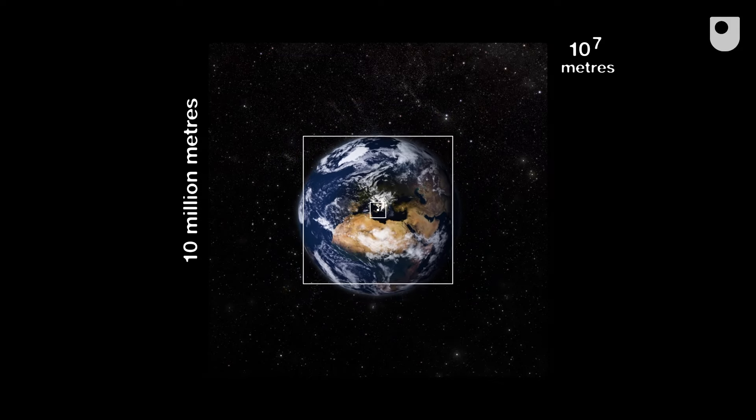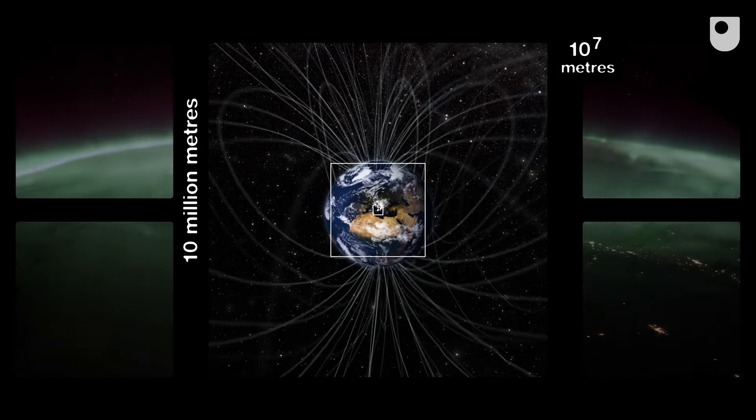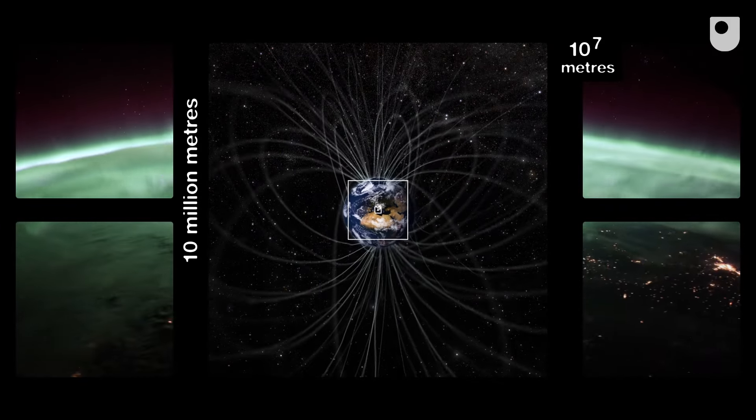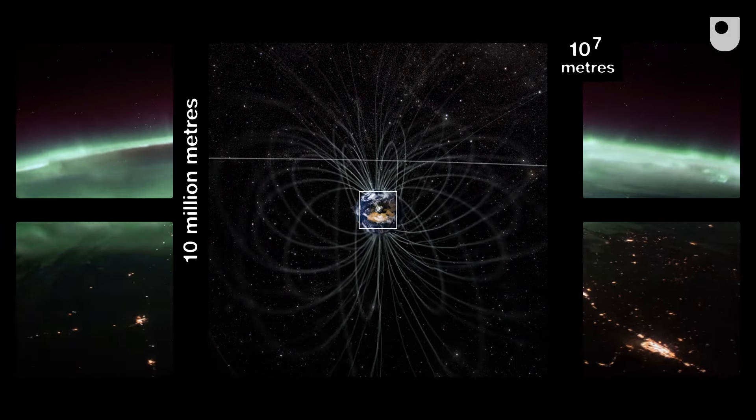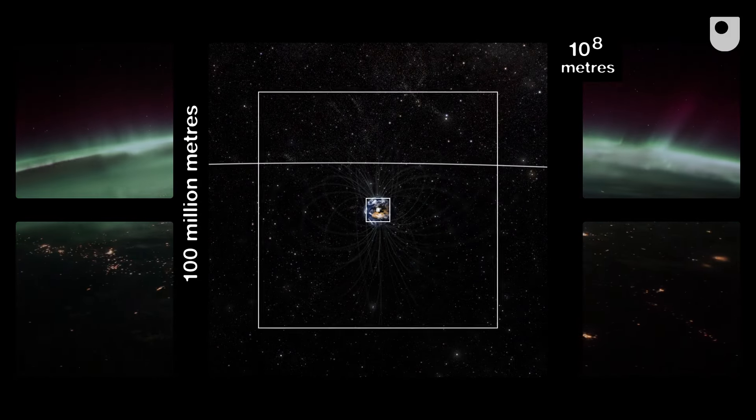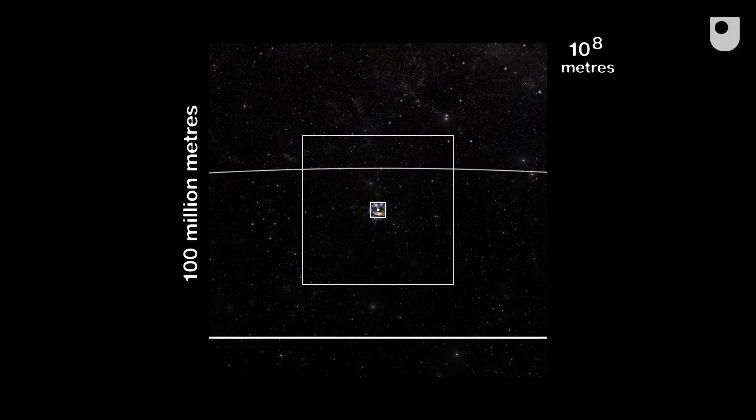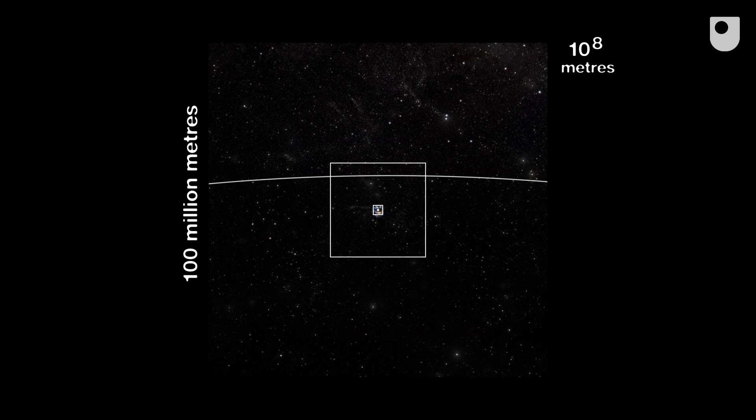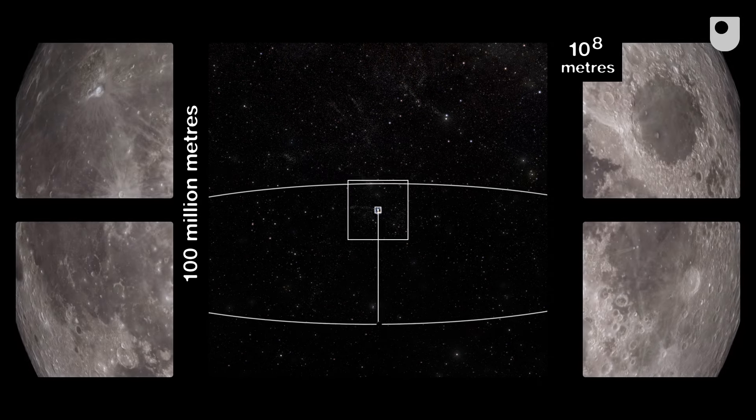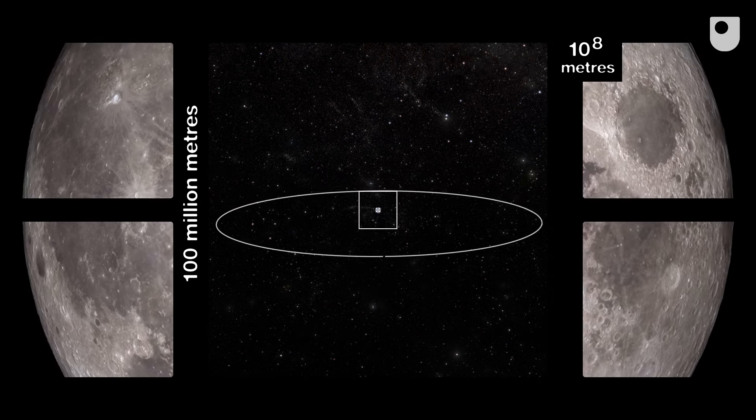Ten million metres. The invisible magnetosphere shields us from the dangerous ionising radiation of space. Ten to the eight metres. This line extends at the speed of light. This is the time it takes for light to reach us from the Moon's orbit. The age of moonlight.